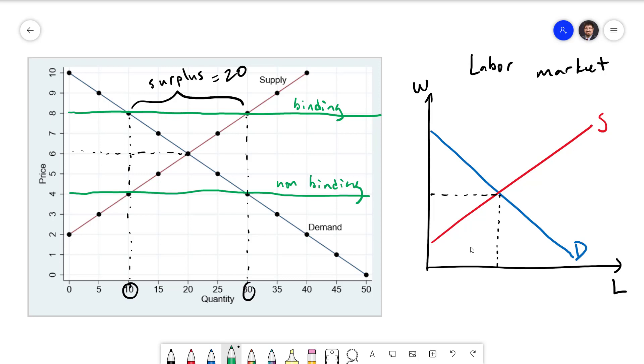Whether or not the minimum wage is binding or not depends on the specific labor market we're thinking about. There is not just one labor market. There are different labor markets for different levels of education, different skill sets, and so forth. For most high skilled labor markets, the minimum wage is well below the equilibrium wage so it's non-binding.